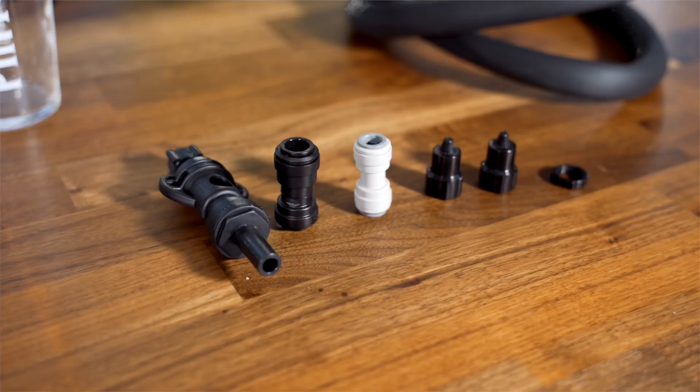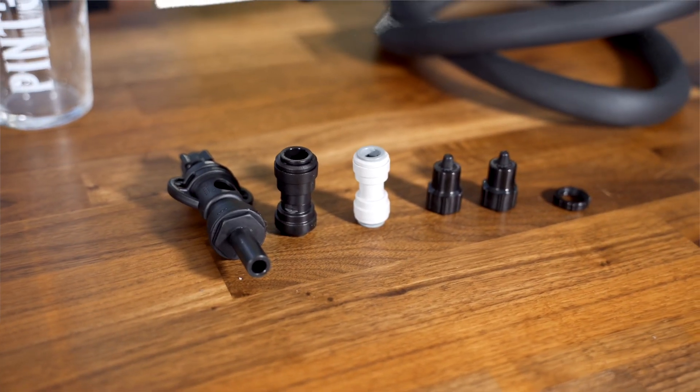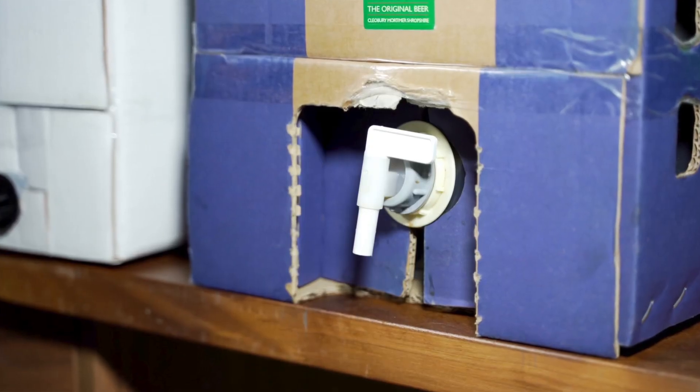Secondly, you want to take the smaller end of the black John Guest onto the other end of the pipe, and then assess your polypin or bag in box to work out which tap you have.